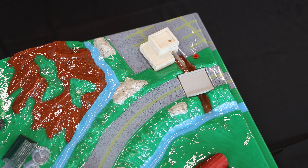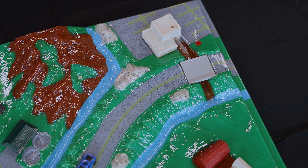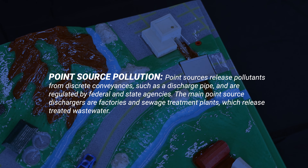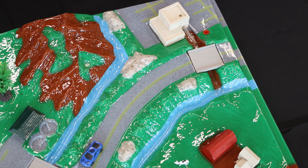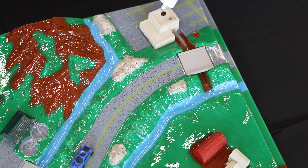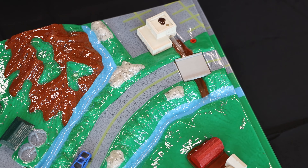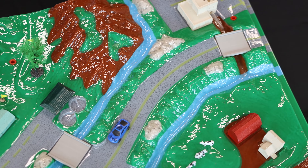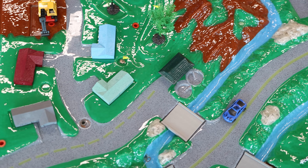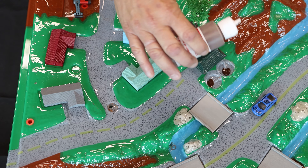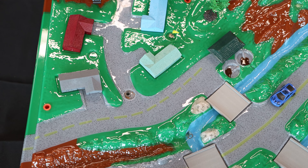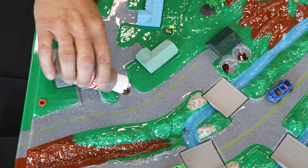One of the first types of pollution we want to talk about associated with our watersheds is point source pollution. Point source pollution is any kind of pollution where it comes directly from a source — for example, our little industrial area across town. We're going to put some of this on here to simulate some of that industrial pollution that will ultimately work its way out. We've also got a wastewater treatment plant treating waste right along the river's edge. And then one of our last sources of point source pollution is manholes and areas along our streets and bridges.